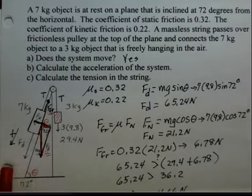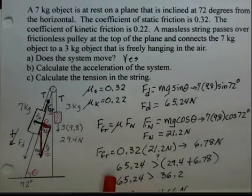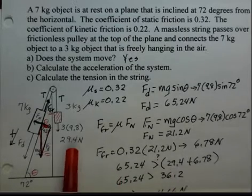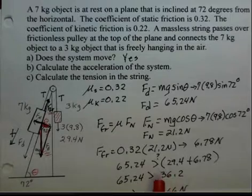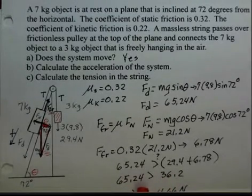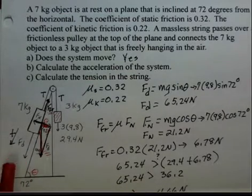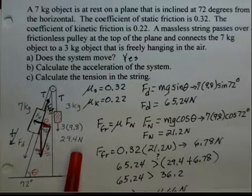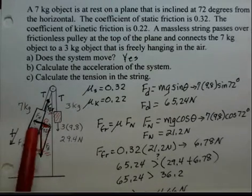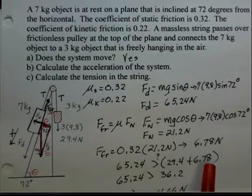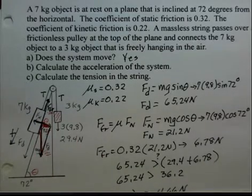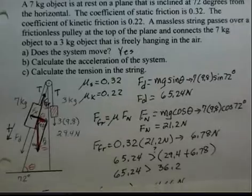The question is, is the external force 65.24 newtons greater than 29.4 plus the available friction? And the answer is yes. This finishes our analysis of question A. The 65.24 newtons down the plane is greater than the 29.4 newtons and the friction force combined.